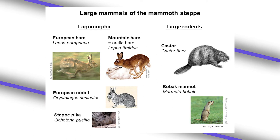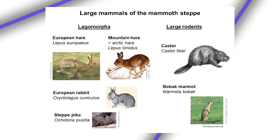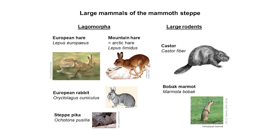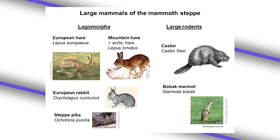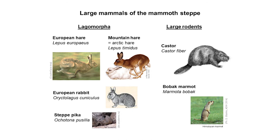Small-size mammals must also be considered, especially in terms of environment and subsistence behaviors, such as hares. In some sites, large rodents have also been used by humans in their subsistence habits.